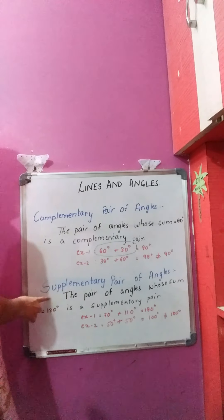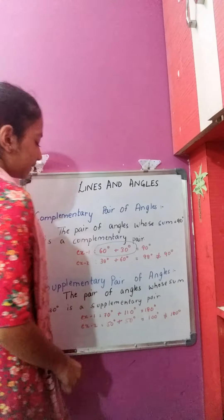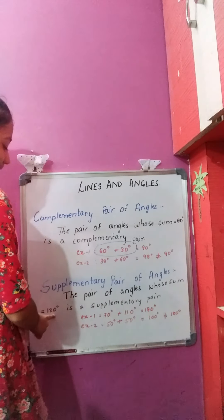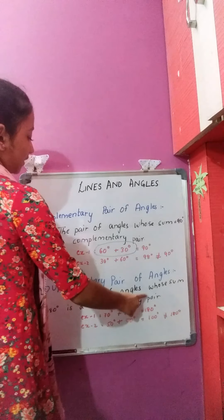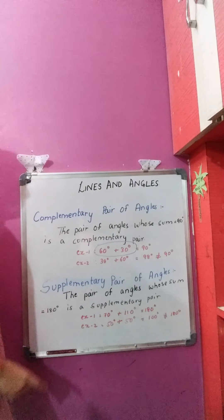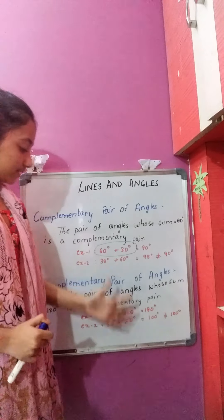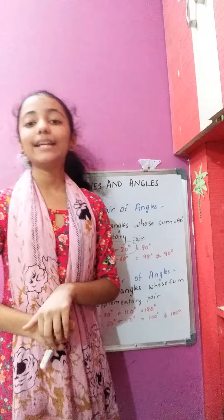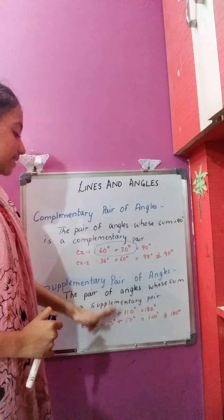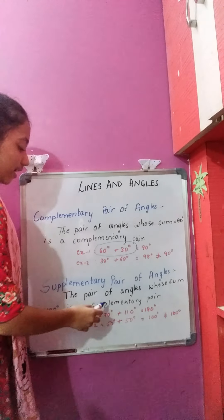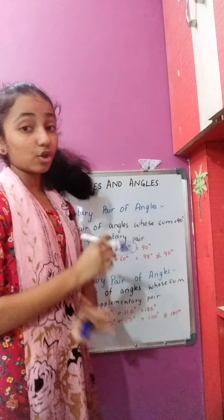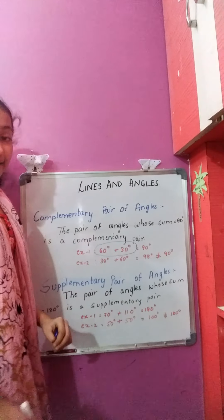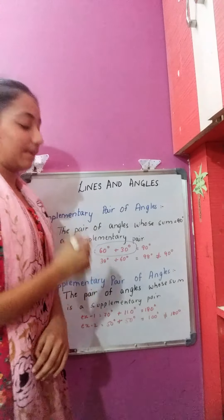Coming to supplementary pair of angles: the pair of angles whose sum is equal to 180 degrees is a supplementary pair. Example 1: 70 degrees plus 110 degrees equals 180 degrees, which means this pair is a supplementary pair. Again, 180 degrees alone is not supplementary — 70 degrees and 110 degrees together make a supplementary pair.